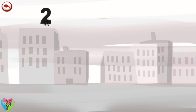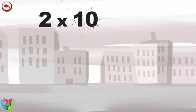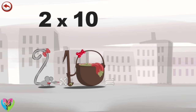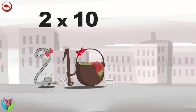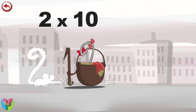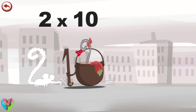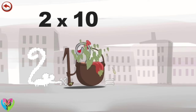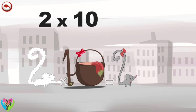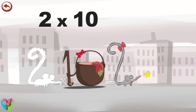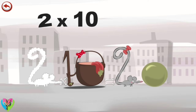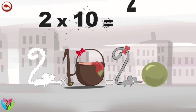What's the story of two times ten? When Two Squeaks meets the potion Magi-ten, it makes her very, very hungry. She dives headfirst into the cauldron and comes out feeling very full. She gives an enormous magic burp and blows a bubble in the shape of a zero. Two times ten is twenty.